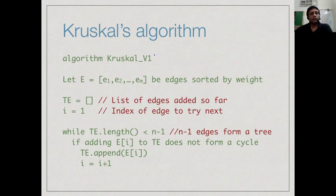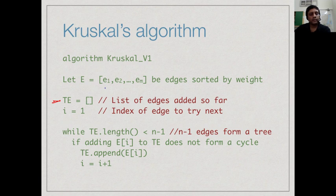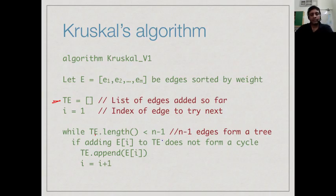Here is a high-level view of the algorithm. Let the edges be sorted in order e1 to em. We start with an empty tree, kept as a list of edges, and scan this list in order 1 to m. Let i be the index of the edge to be tried next. So long as we have not yet added n minus 1 edges — remember that if we add n minus 1 edges and we have a connected graph it must be a tree — this was one of the characterizations we said about trees.